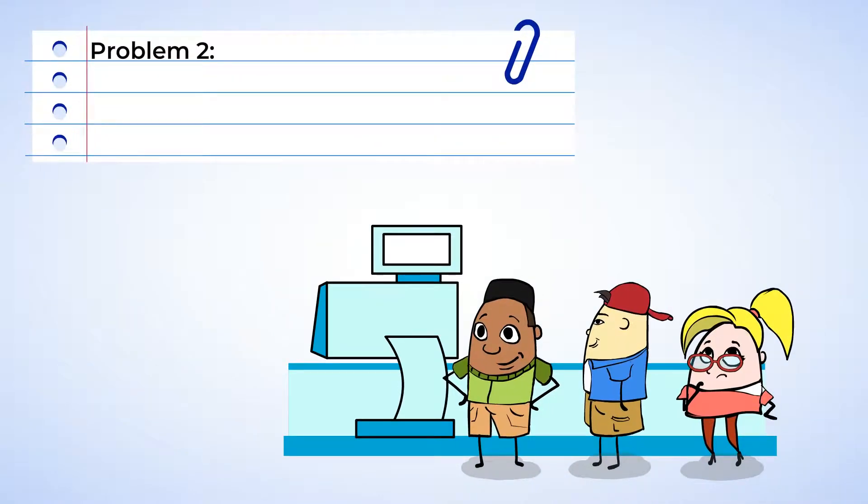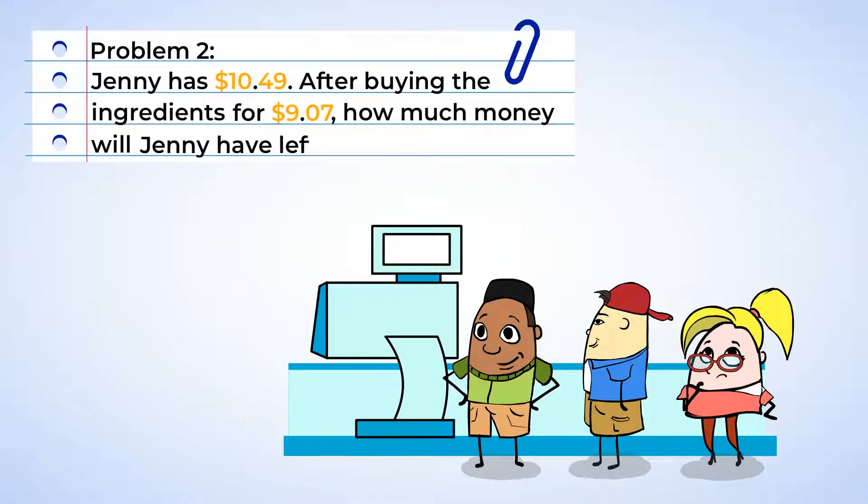And while waiting at the checkout line, Jenny noticed that she has $10.49. So, after buying the ingredients, how much money will Jenny have left? Well, we can subtract in a way similar to addition. We want to make sure the place values are lined up, and we can use the decimal points to help us.